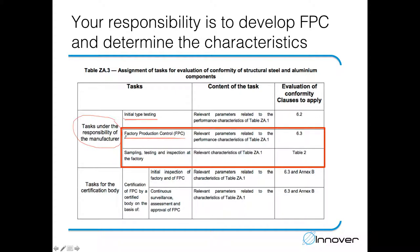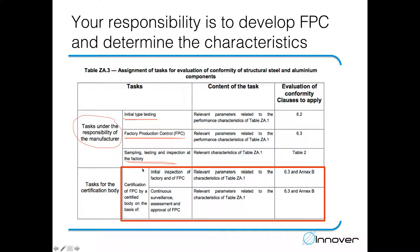As we are talking about the 2+ system, there are also tasks for the certification body. The notified body must verify that you have set up the FPC system correctly and that sampling, testing and inspection at the factory are being carried out properly. The notified body then issues a certificate for the factory production control, vouching that you have the necessary capabilities to perform initial type testing and to draw up the declaration of performance and the CE marking.